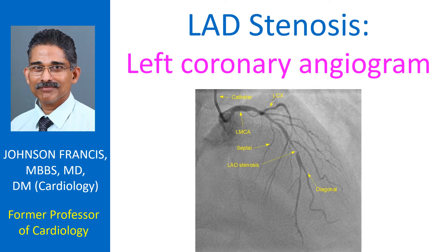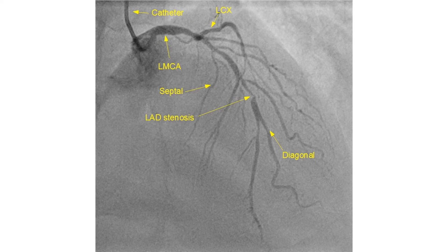A small diagonal and a septal arising at the proximal end of the stenotic LAD segment have ostial stenosis. A transradial catheter is seen at the upper end of the image. The left main coronary artery shows distal tapering prior to its division into LAD and left circumflex coronary arteries. The LCX also shows stenosis in its distal part, though this is a foreshortened view for LCX.